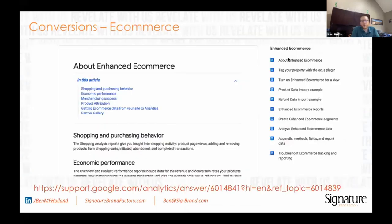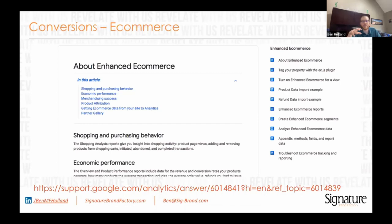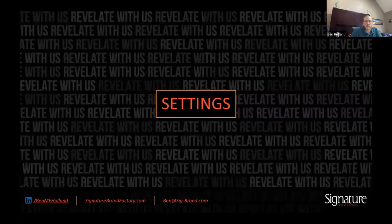E-commerce is also within this conversion section. It's easy to turn on e-commerce — you just click a button in the back end. But if you want to turn on enhanced e-commerce, I highly encourage you to read the linked article. Now I'm going to get into the settings of Google Analytics and how to get it humming and giving you really great data.